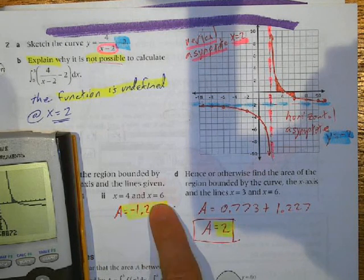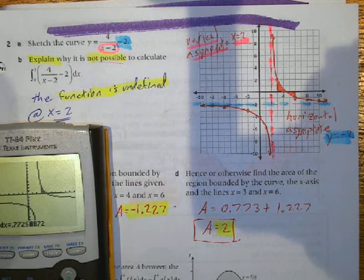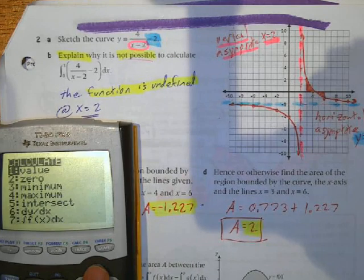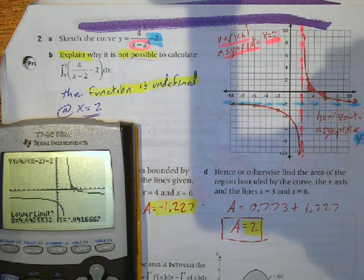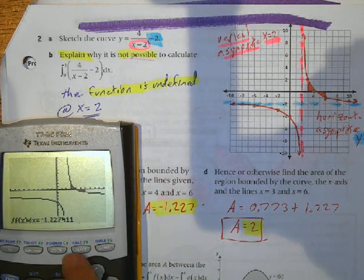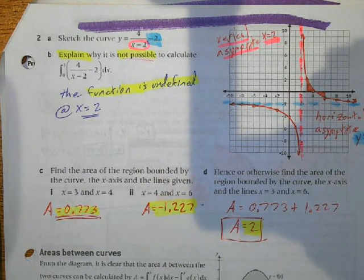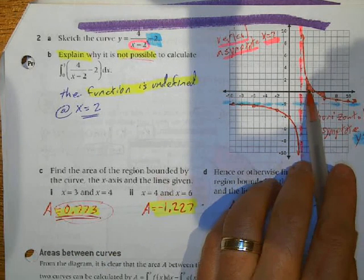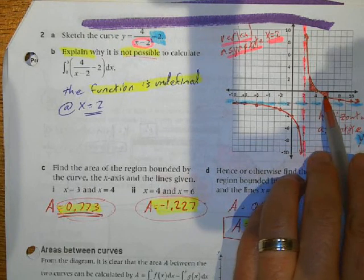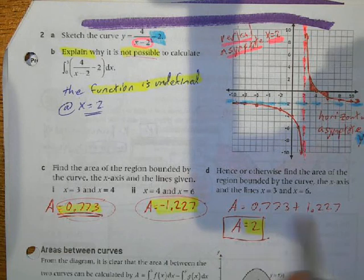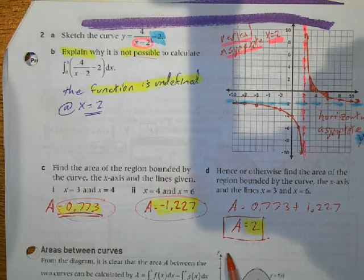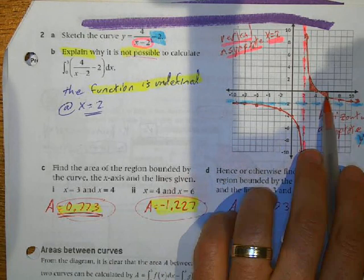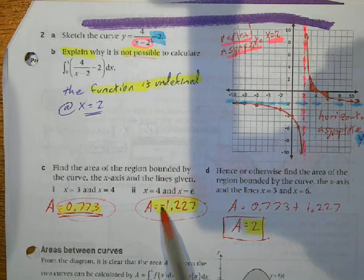Do the same thing between 4 and 6: Second Trace, 7, Enter. Lower bound is 4, upper bound is 6 — and the result is negative 1.22. So if I've got the area above the x-axis and the area below the x-axis, and I add those together, I get the total area. This is another method: if you don't want to use absolute value, find each area separately, change the sign on the negative one, and add them together. You'd need to do it that way if you weren't using the calculator.